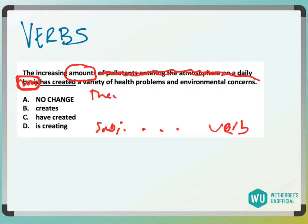So you'd say 'they' — this is plural. So would you say 'they has created'? Nope. 'They creates'? Nope. 'They have created'? Yep, that sounds good. And D — 'they is creating'? Nope.